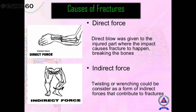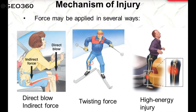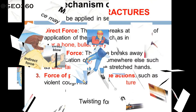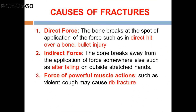Direct force causes the break or crack in the bone at the point of application of the force. Indirect force causes break of bone away from the site of application of force. Muscular force sometimes causes fractures, but this is rare.